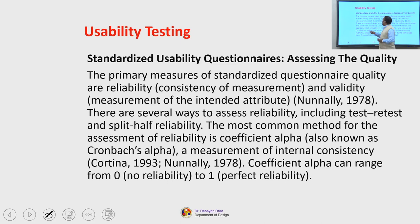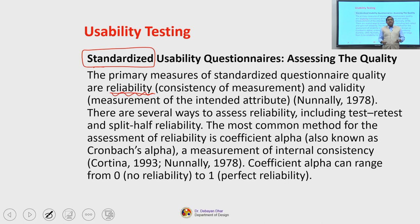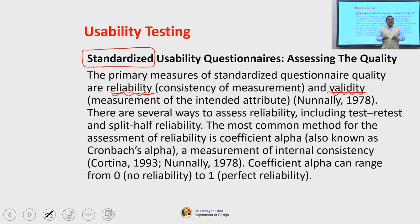Why are we emphasizing the word 'standardized' in standardized usability questionnaire? The primary measures of standardized questionnaire quality are reliability — meaning consistency of measurement — and validity. For reliability, the most common method of assessment is Coefficient Alpha, also called Cronbach's Alpha, which is a measurement of internal consistency of your questionnaire or instrument.